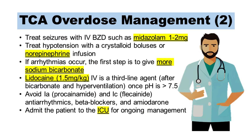Treat seizures with intravenous benzodiazepines, such as midazolam. Treat hypotension with crystalloid boluses or norepinephrine infusion. If arrhythmias occur, the first step is to give more sodium bicarbonate. Lidocaine 1.5 milligrams per kilogram intravenous is a third-line agent after bicarbonate and hyperventilation, once pH is greater than 7.5. Avoid class 1A antiarrhythmics such as procainamide, class 1C antiarrhythmics such as flecainide, beta blockers, and amiodarone, as they may worsen hypotension and conduction abnormalities.